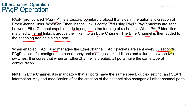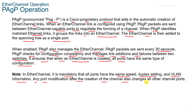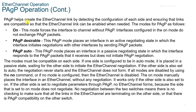PAGP packets are sent every 30 seconds. It checks for configuration consistency and manages link additions and failures between the two switches. It also ensures that when an EtherChannel is created, all ports have the same type of configuration. In EtherChannel, it's mandatory that all ports have the same speed, duplex setting, and VLAN information. Any port modification after the creation of the channel also changes all other ports. PAGP helps create the EtherChannel link by detecting the configuration of each side and ensuring the links are compatible so that the EtherChannel link can be enabled when needed.